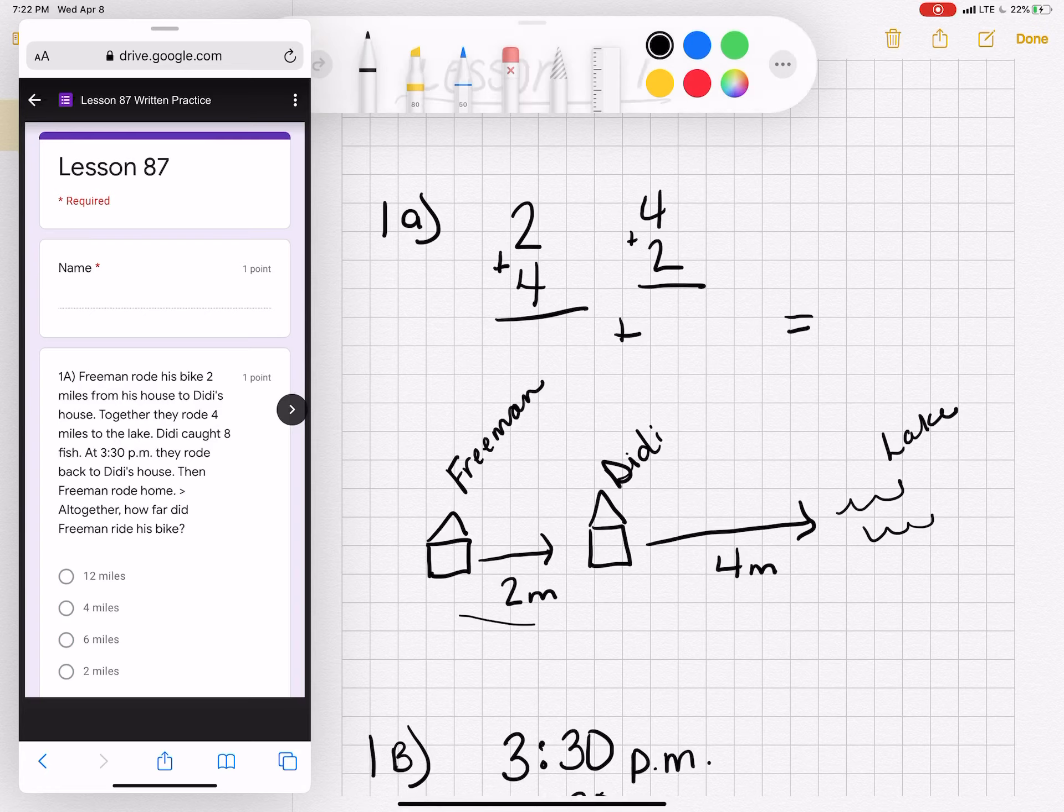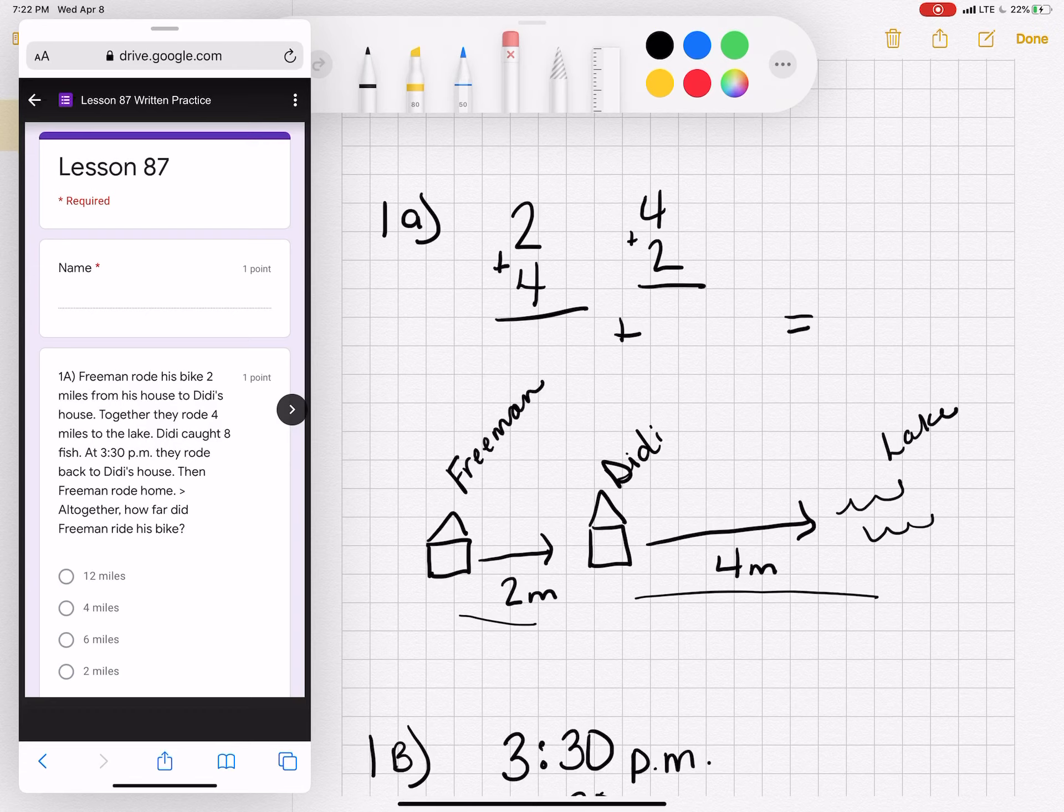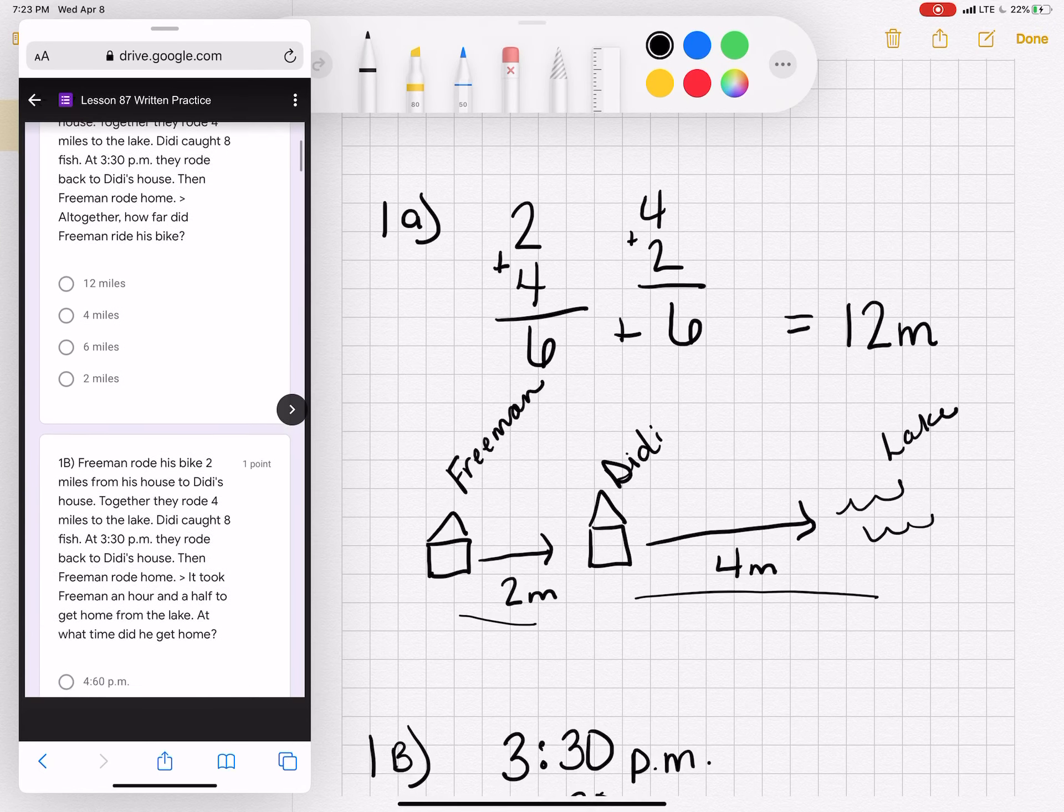So he rode to Dee Dee's house, from Dee Dee's house to the lake, and then all the way back. So that would be two miles plus four miles, which is six miles. And then all the way back would be four miles plus two miles, which is six miles. Six plus six equals twelve miles, for 1A is twelve miles.